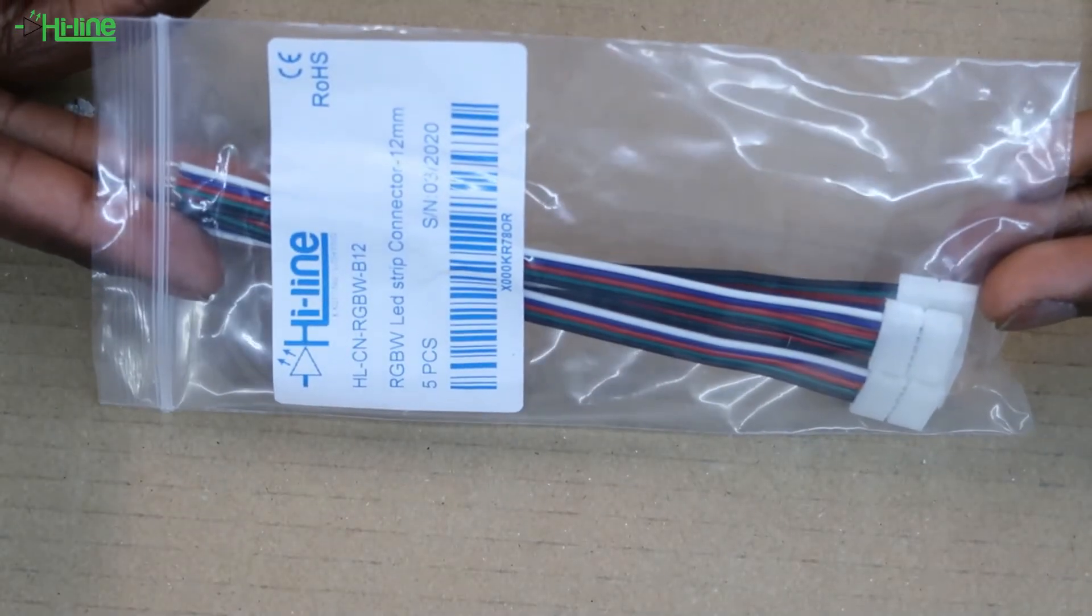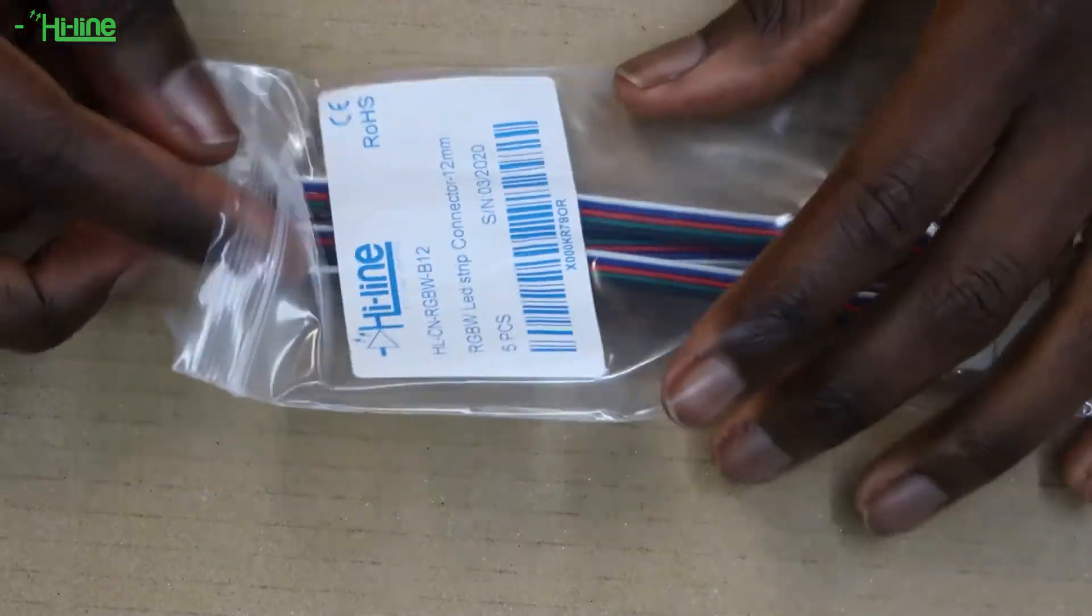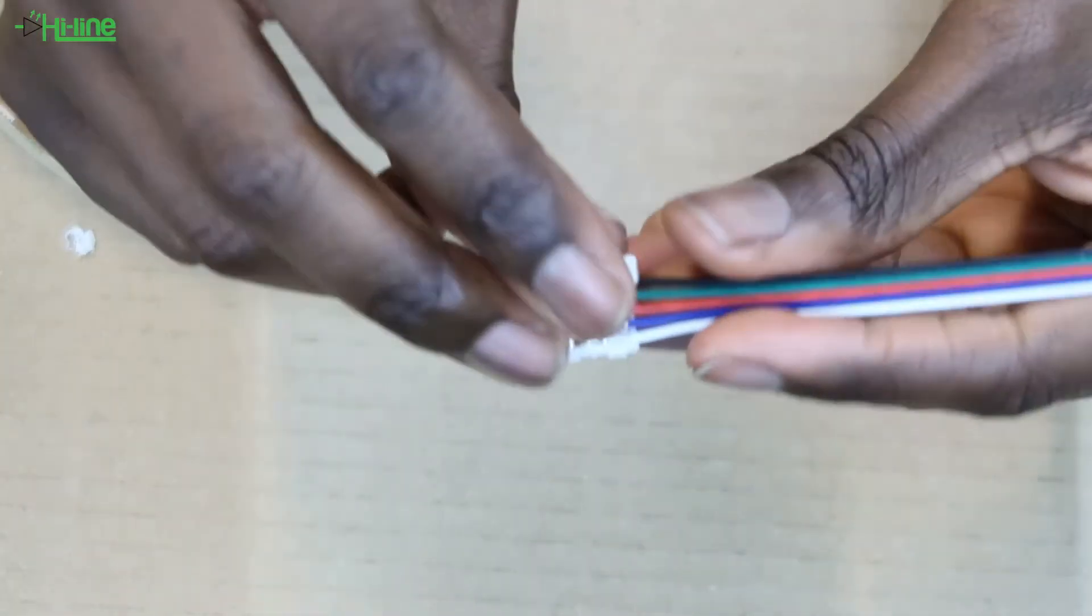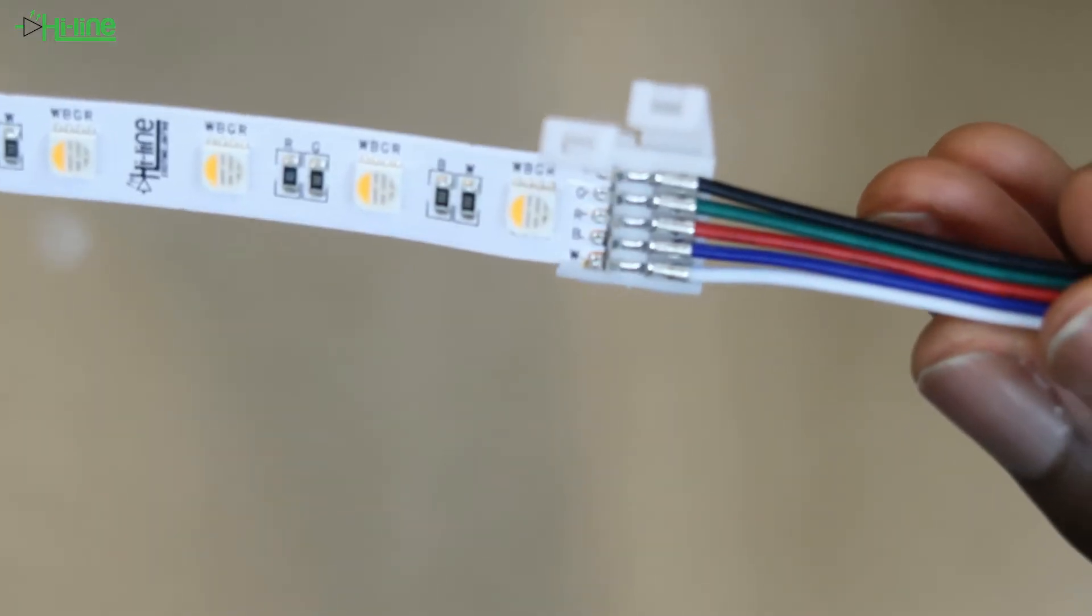We also have available our 12mm RGBW solderless power connector with 15cm cable at the end. What you have to make sure with this connector is that when you're sliding the LED strip inside, you have to make sure that the LED strip is making contact with the connector itself.